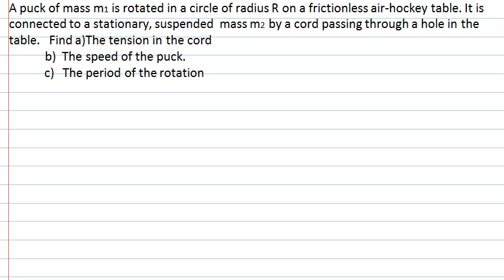This first class is about uniform circular motion. Take a moment and read through the question carefully. I'm going to start by sketching what we have in this question. We have an air hockey puck which is on a table with a hole in the center, and the puck is connected by a cord